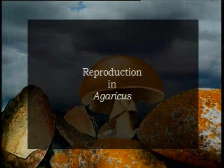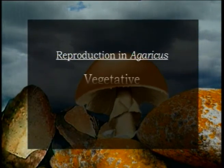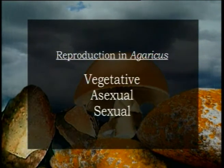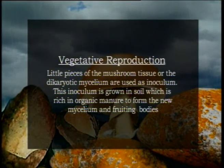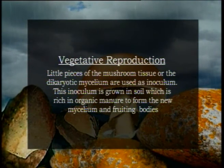After discussing the structure of Agaricus in detail, we now come to the second section: reproduction in Agaricus. Reproduction in Agaricus occurs by vegetative, asexual, and sexual methods. Vegetative reproduction methods are usually prevalent in edible mushrooms, where little pieces of mushroom tissue or dikaryotic mycelium are used as inoculum, grown in soil rich in organic manure to form new mycelium and fruiting bodies. Agaricus does not commonly reproduce by asexual methods.